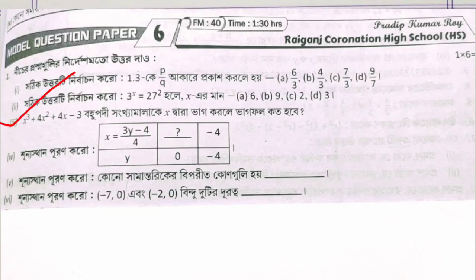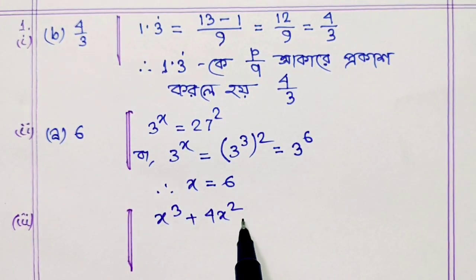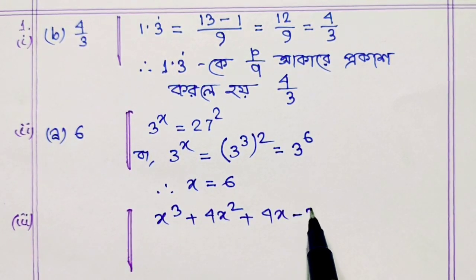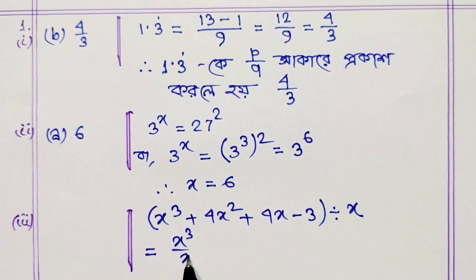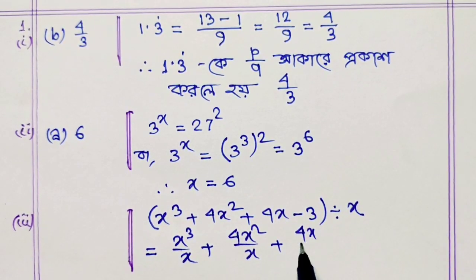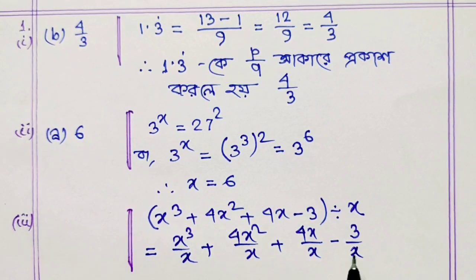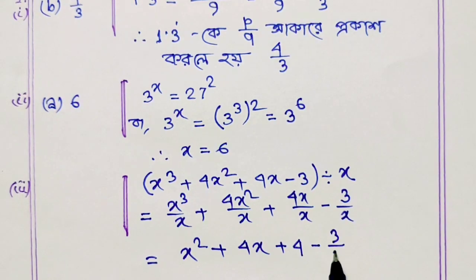Third problem — note this down: X cube plus 4X square plus 4X minus 3. Dividing this polynomial by X, the result will be: X cube by X plus 4X square by X plus 4X by X minus 3 by X.